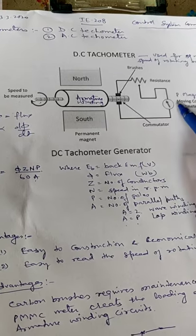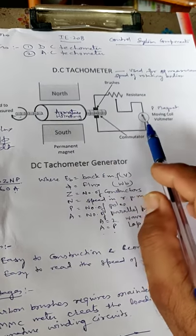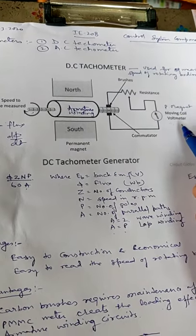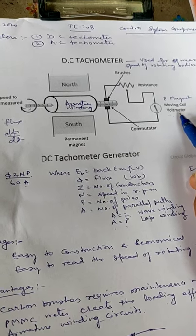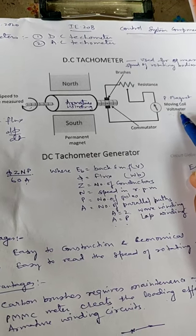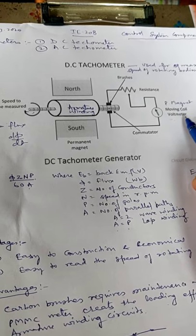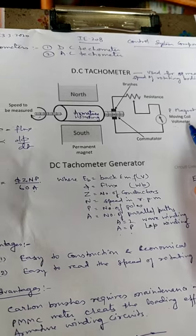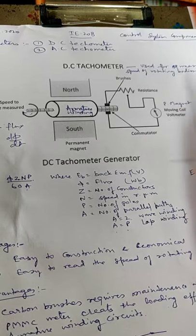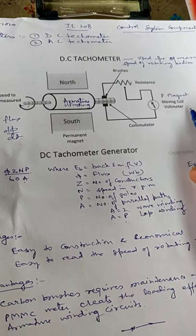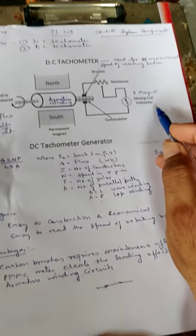Another disadvantage is that the PMMC voltmeter should have ideally infinite resistance, but as that is not possible it has some finite resistance and creates a loading effect on the armature circuit, producing an erroneous result — it does not measure the accurate voltage generated in the armature winding, so the actual speed cannot be precisely measured. That is why this DC tachometer is not used for precise measurement. AC tachometers are more precise and these disadvantages are rectified — that will be covered in the next lecture.